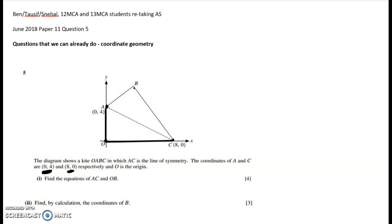The first thing we've got to do is find the equations of AC and OB, so the two diagonals of the kite. Right, and then we have to find, by calculation, the coordinates of B. There are a bunch of different ways to do this. I'm just going to do this how I saw it, which I think is the most obvious way.